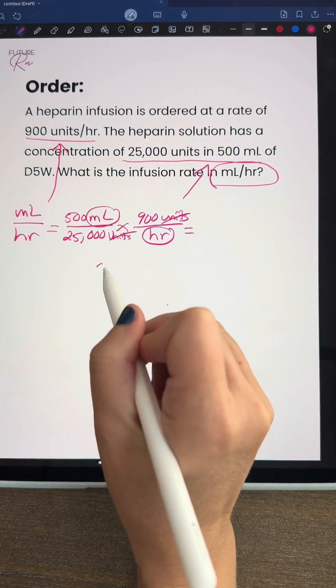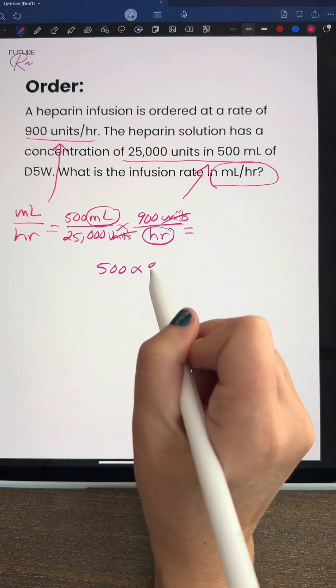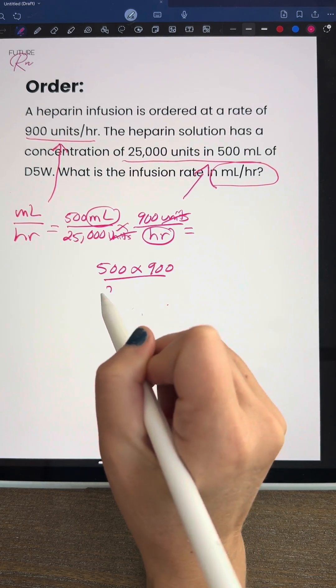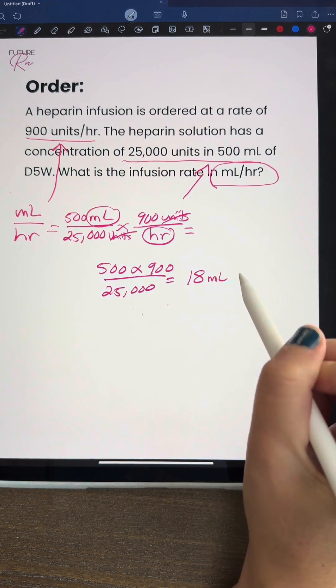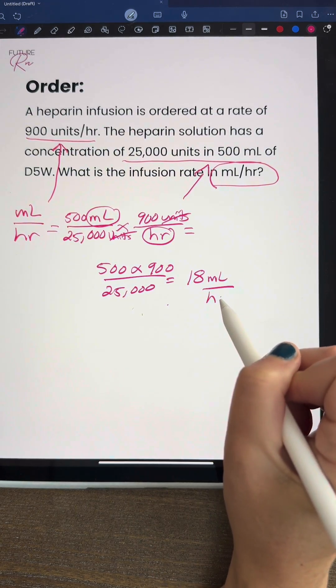Okay, so now we just do the math. It's 500 times 900 divided by 25,000. Once we finish that, it comes out as 18 milliliters per hour.